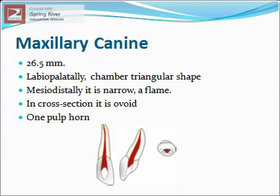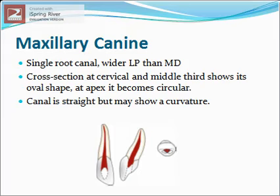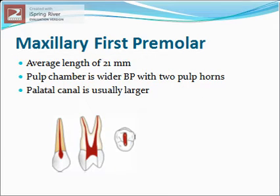Labiopalatally, the pulp chamber is almost triangular in shape with the apex pointed incisally. Mesiodistally it's narrow, sometimes resembling a flame. In cross section it's ovoid in shape with a larger diameter labiopalatally. Usually one pulp horn is present corresponding to one cusp. Normally there is a single root canal, which is wider labiopalatally than in the mesiodistal aspect. Cross section at cervical and middle third shows an oval shape; at the apex it becomes circular. The canal is usually straight but may show a distal apical curvature.